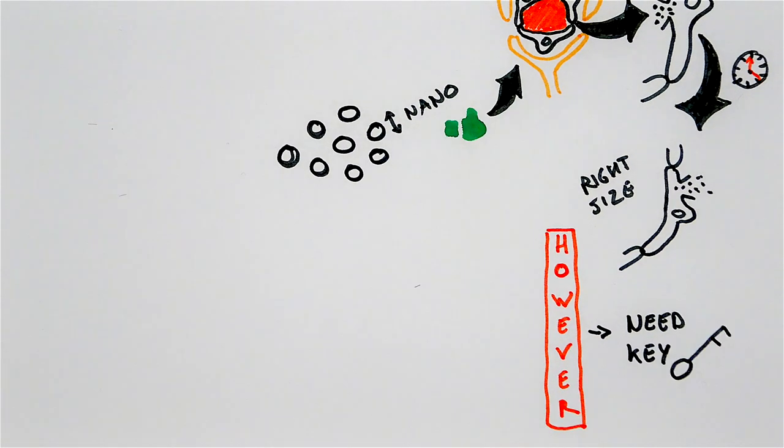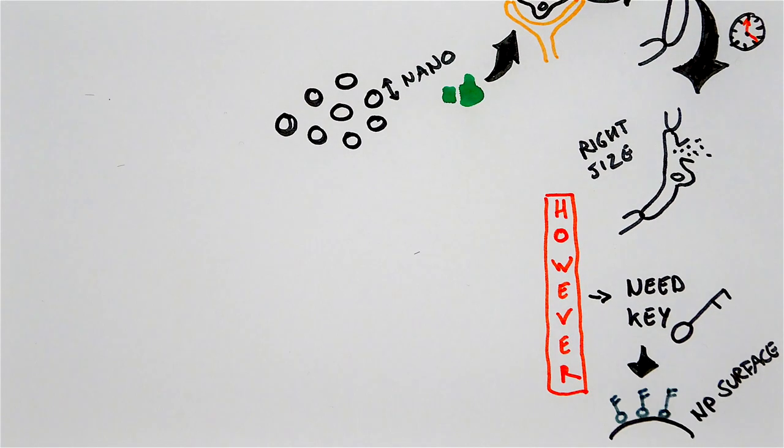However, in order to pass through the castle gate, they need the right key. So I cover my nanoparticles with the right key to get through the blood-brain barrier.